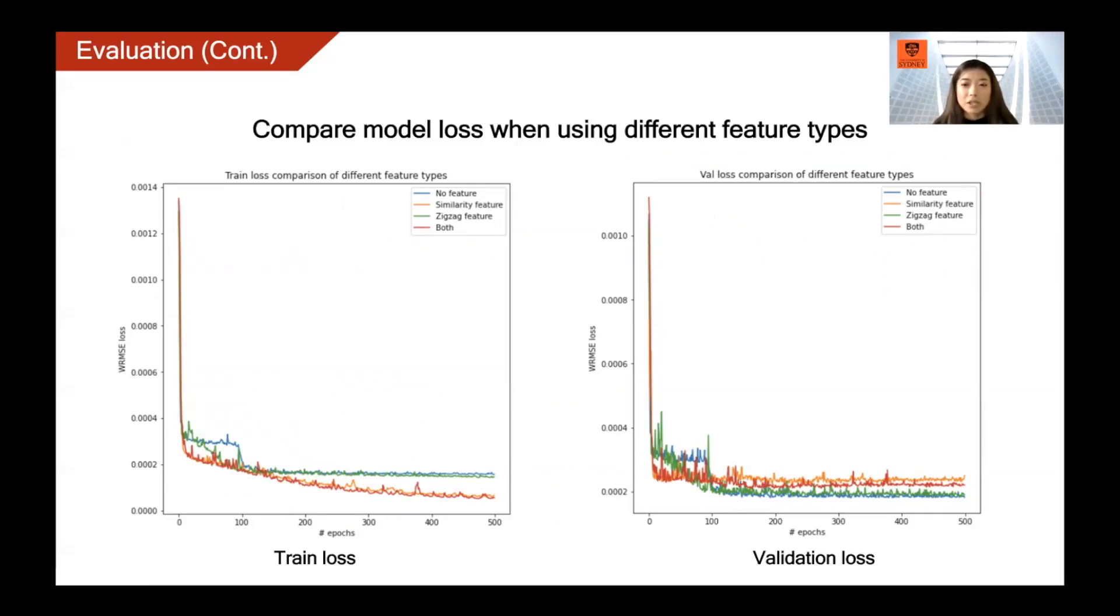Since the validation loss is high. The result suggests that both of the two features can help to provide more information to the model and speed up the training process.